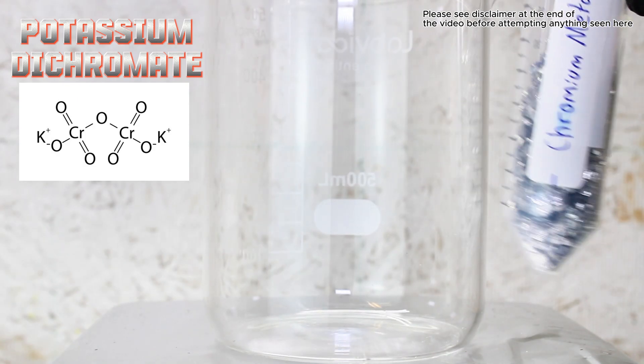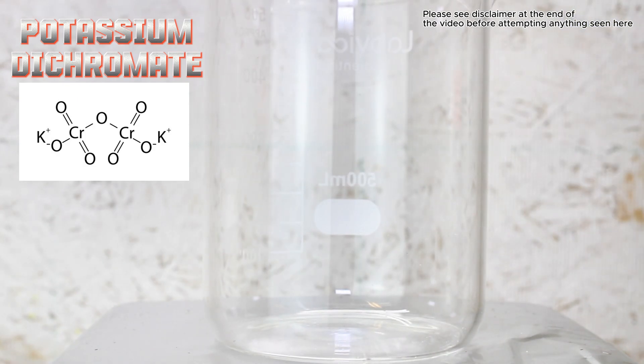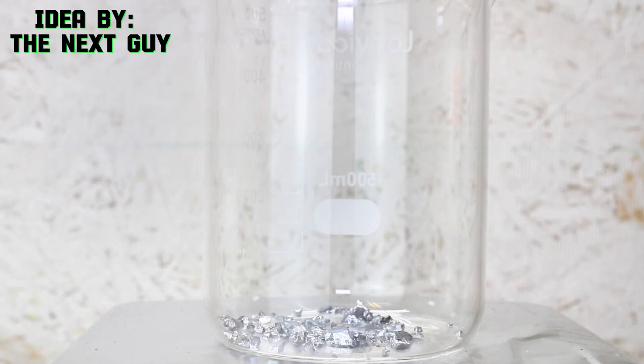Today I'm going to make the chemical potassium dichromate from elemental chromium. This video was actually a request from my patron, the next guy, and I think it turned out pretty well.